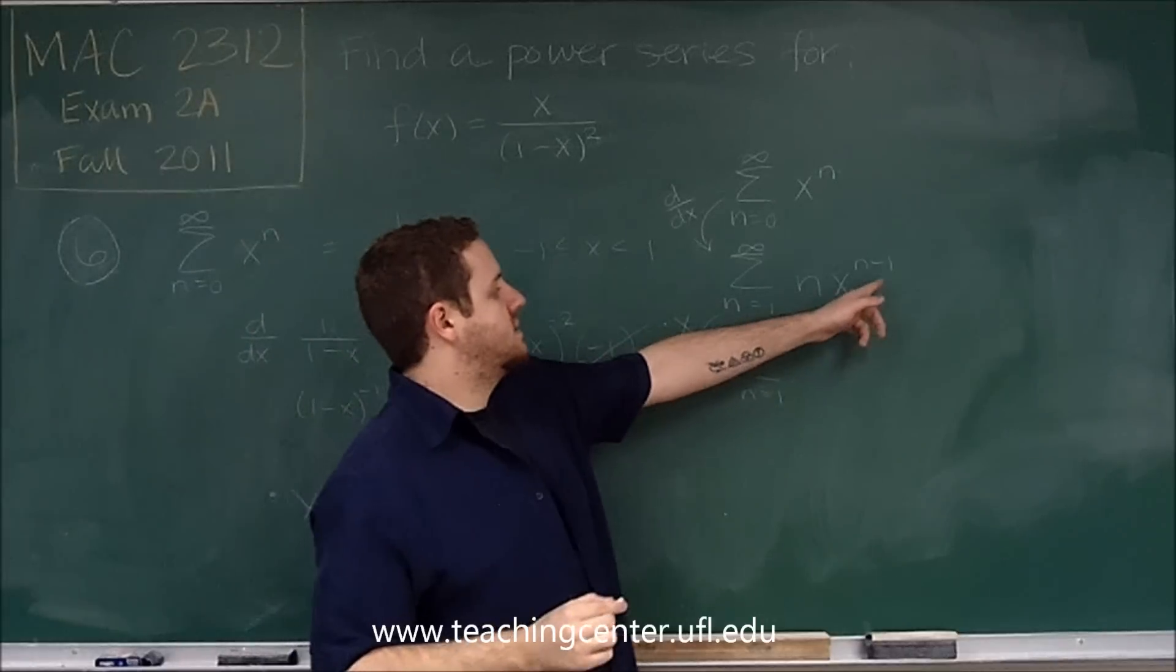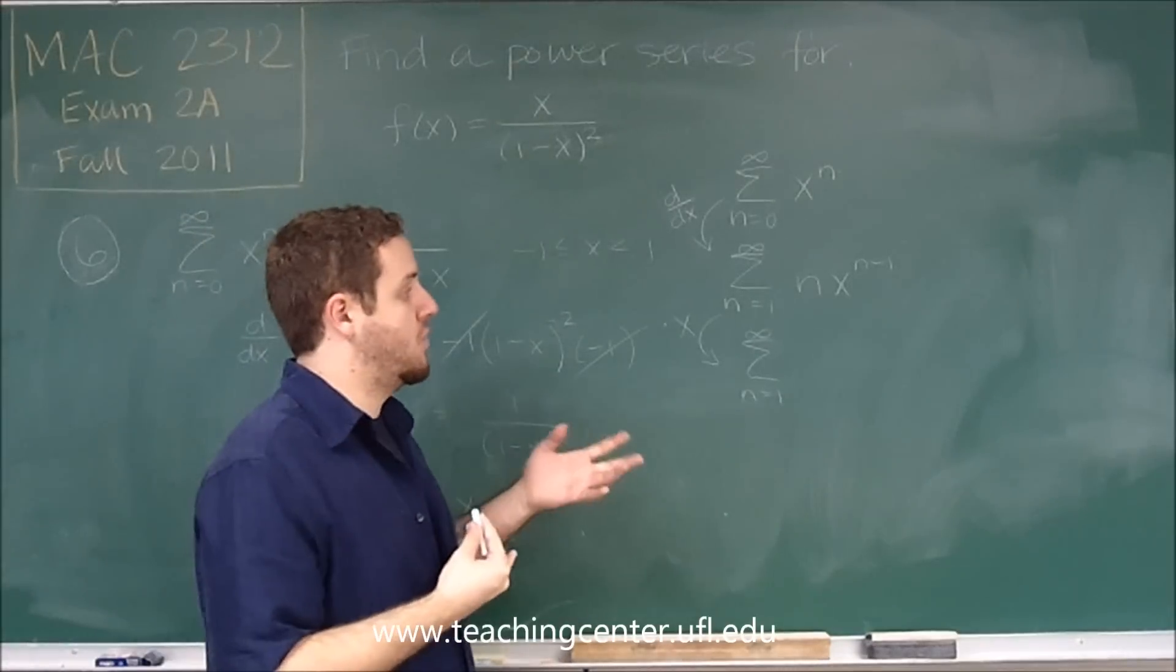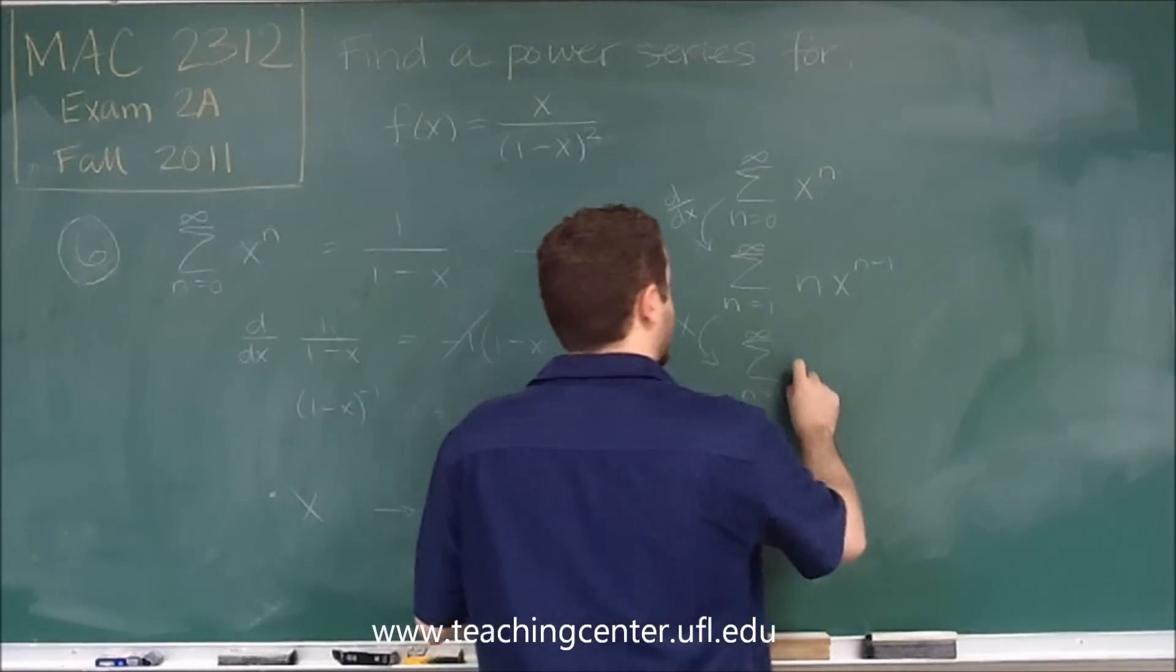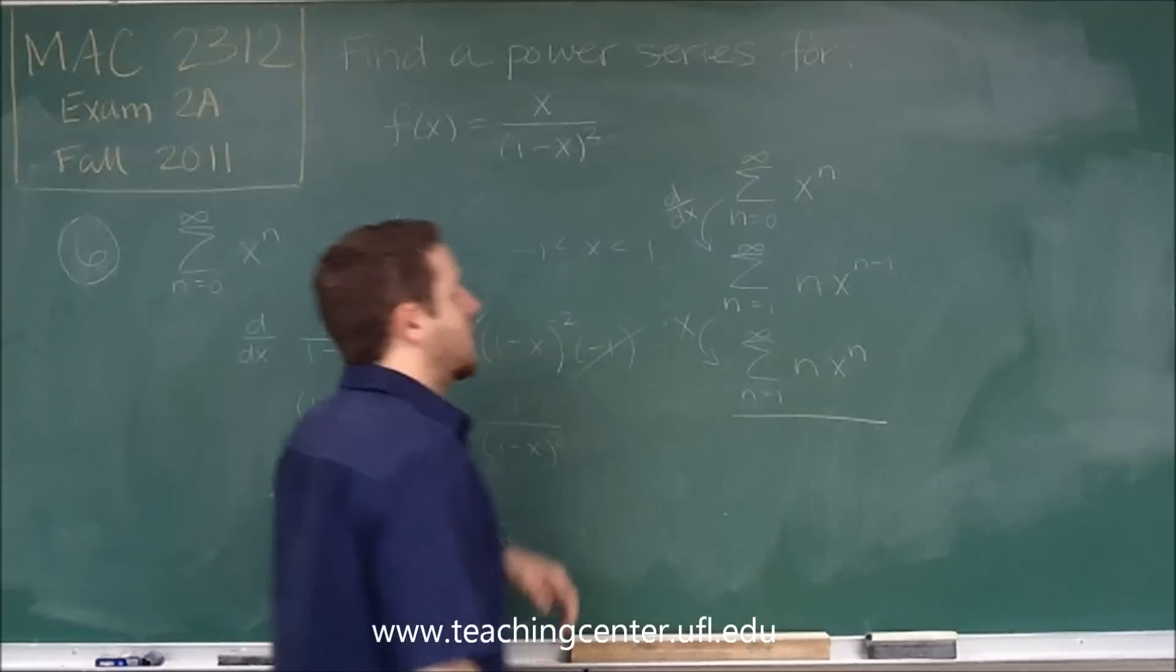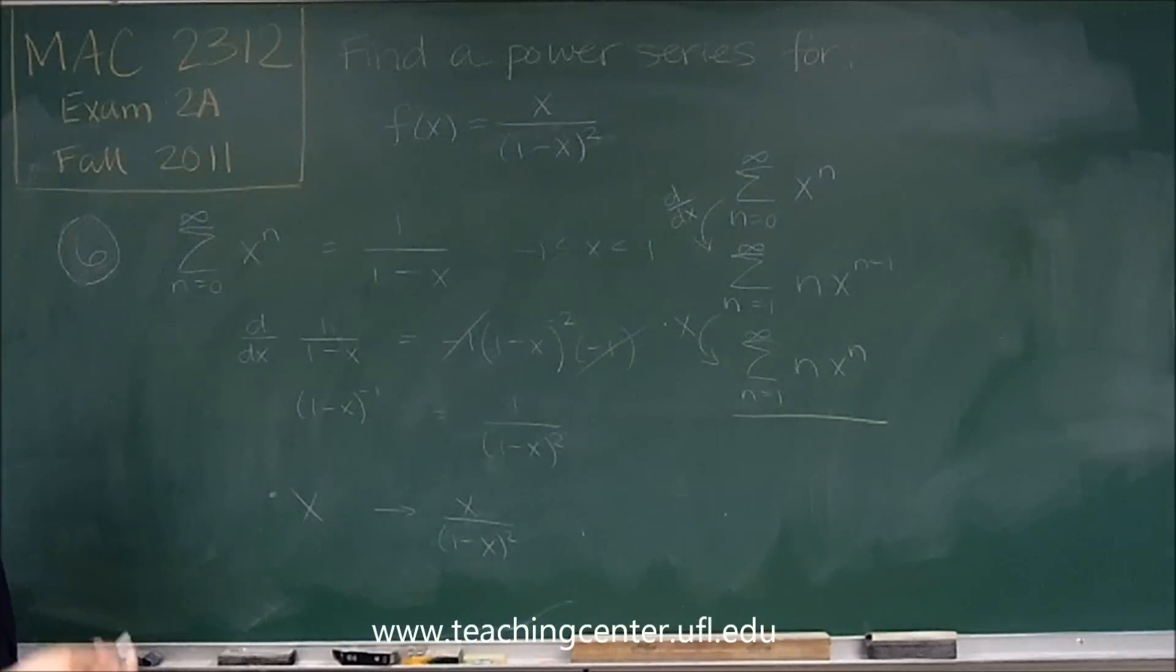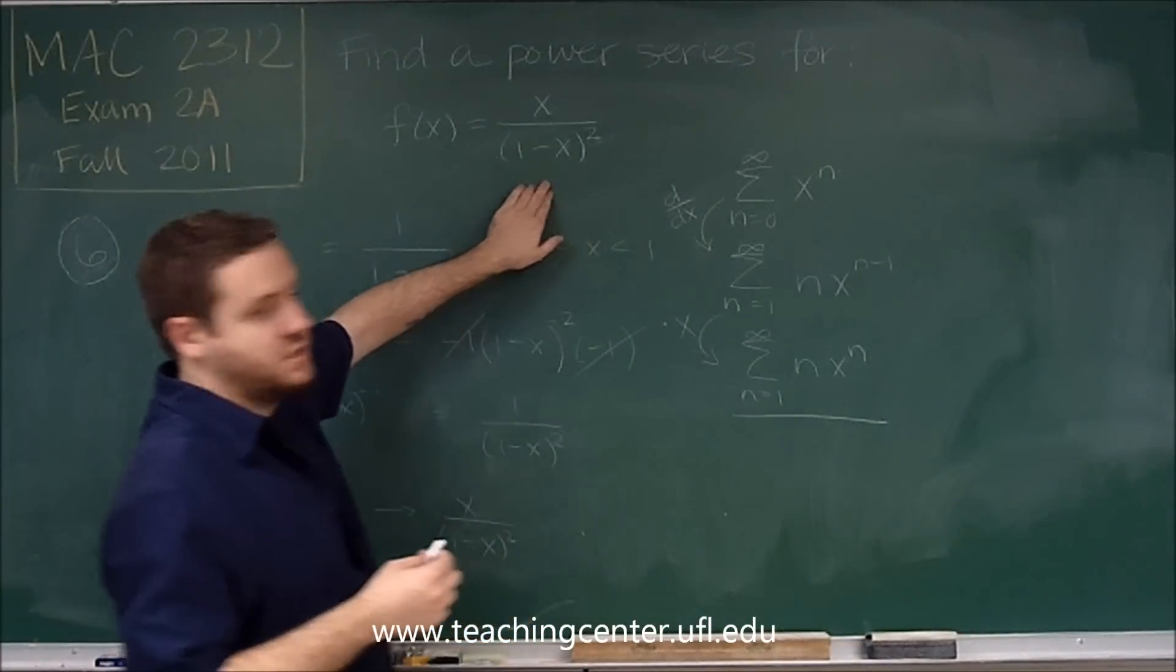But if we're going to multiply by x, that just is the same thing as saying we're raising the power of x by 1. It was n minus 1, so now we get n times x to the n. So we get the series from 1 to infinity of n times x to the n. So that's our power series representation for this function.